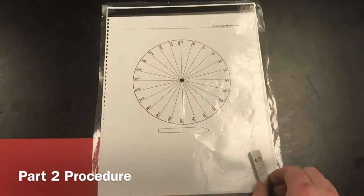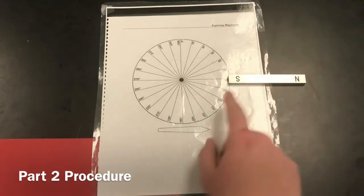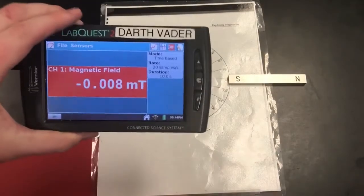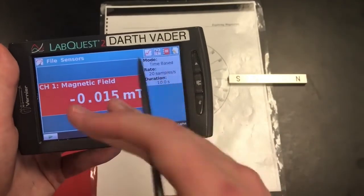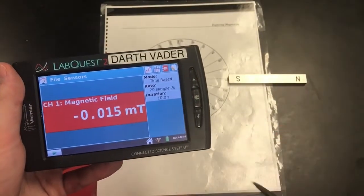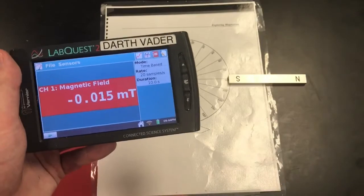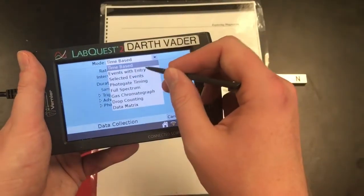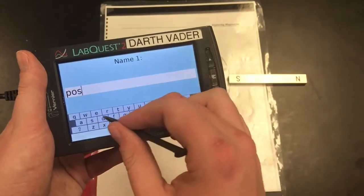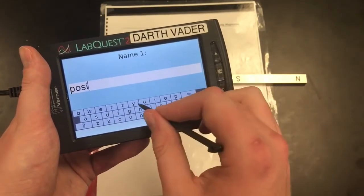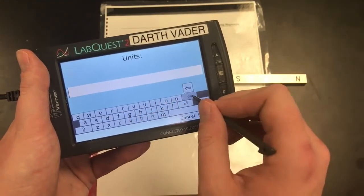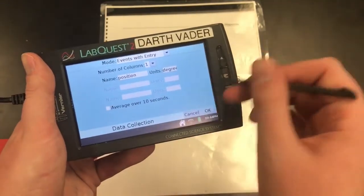For part two, we're going to use this degree wheel. First thing I want you to do: set the south end of the magnet at 90 degrees. In here on our LabQuest, make sure you're back on this home screen. You can go file, new, and you're going to want to discard that last experiment as long as you have it on graphical analysis. Our mode is going to be events with entry for part two, and the name of our event is going to be position, and our units are going to be in degrees.